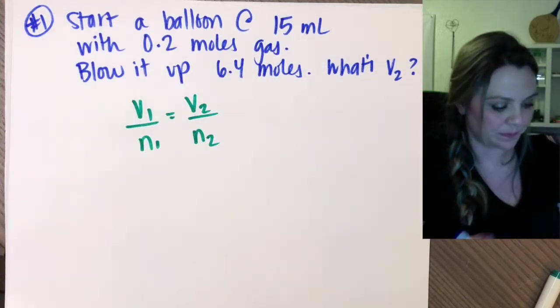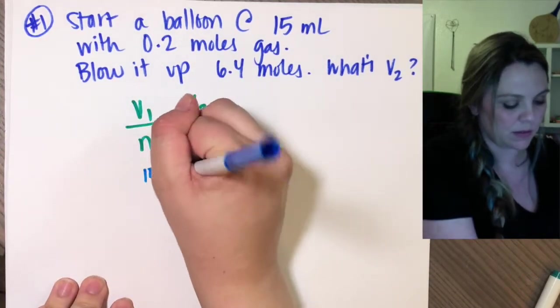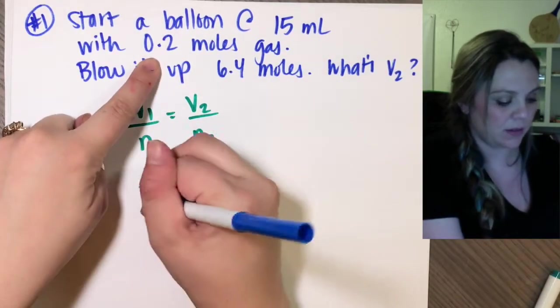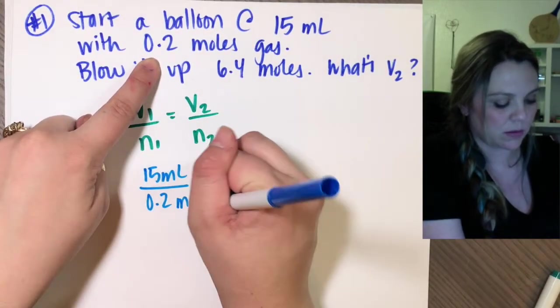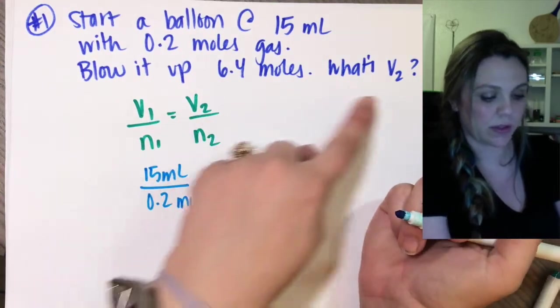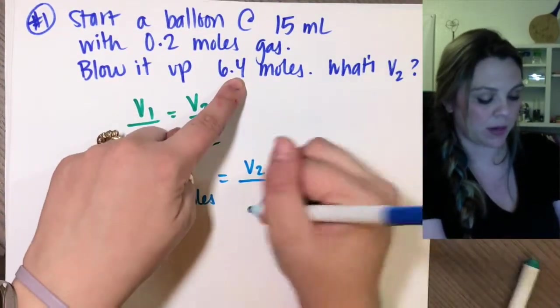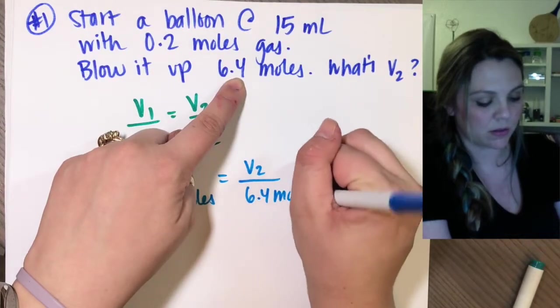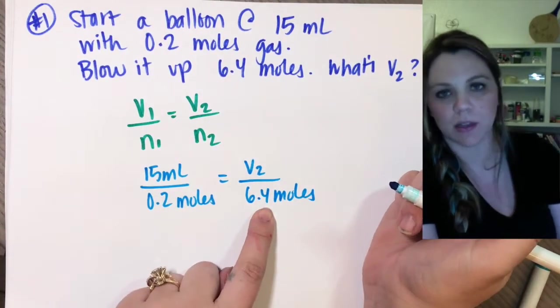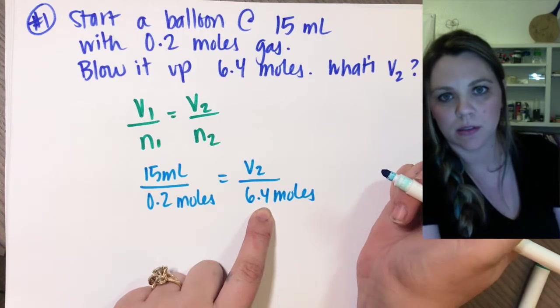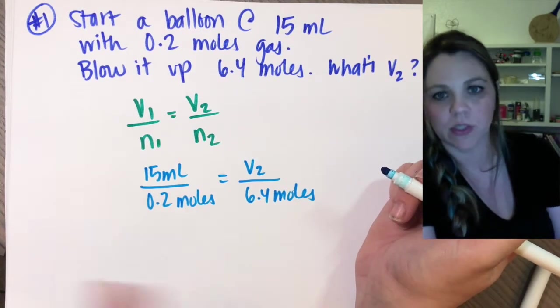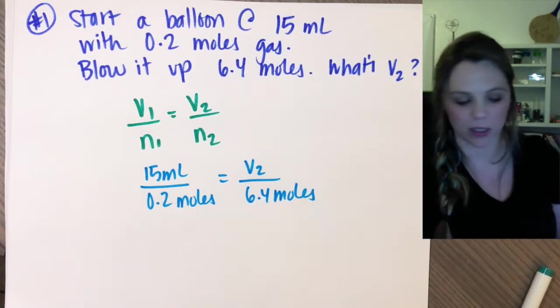So volume one, I have 15 mils divided by 0.2 moles equals volume two, I don't know, that's what I'm solving for, divided by 6.4 moles. I didn't even give you anything to convert, right? You might be given something like grams instead of moles, convert gram to mole, whatever. You know how to do that.